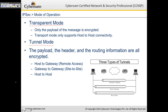Tunnel mode can be used in three scenarios: host-to-gateway or remote access or client-to-site VPNs, gateway-to-gateway or site-to-site VPNs, and host-to-host. In host-to-gateway, a device connects to a gateway via VPN. In gateway-to-gateway, which is site-to-site, VPN exists between two routers or two offices. In host-to-host, an end computer creates a tunnel with another end computer — that's end-to-end encryption between two computers.